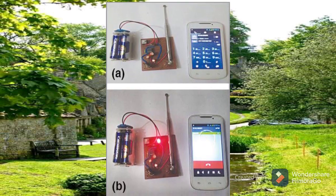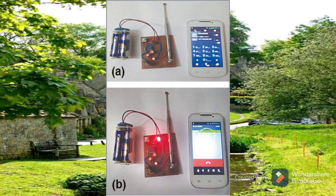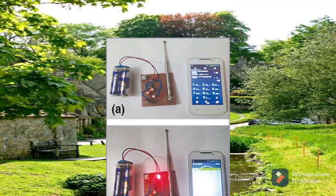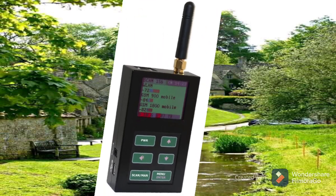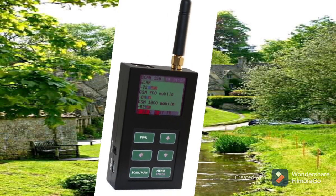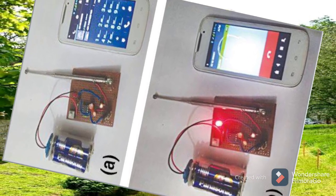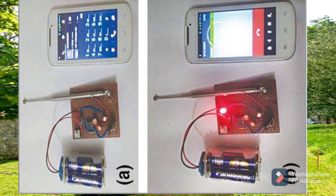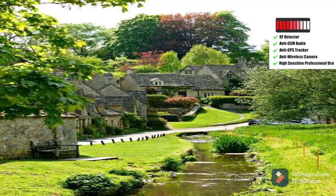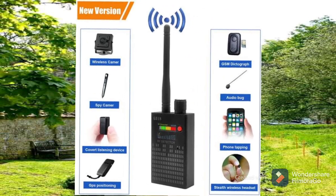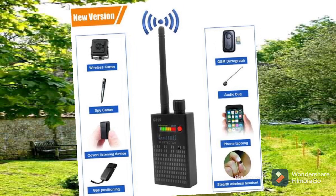Components required for the cell phone detector circuit: number one, BC548 transistor; number two, CA3130 IC; number three, 2.2 M ohm resistor x2; number four, 1 K ohm resistor; number five, 100 K ohm resistor; number six, 47 pF capacitor; number seven, 0.22 UF capacitor; number eight, 100 UF capacitor; number nine, red color LED; number ten, 9 volt power supply. These are the components required for the cell phone detector circuit. Thanks for watching.